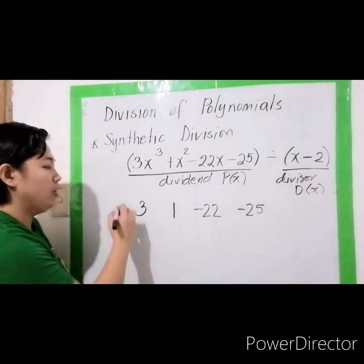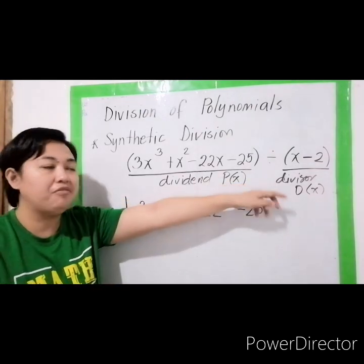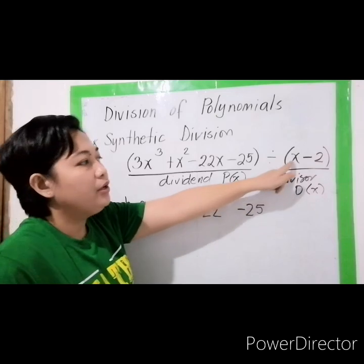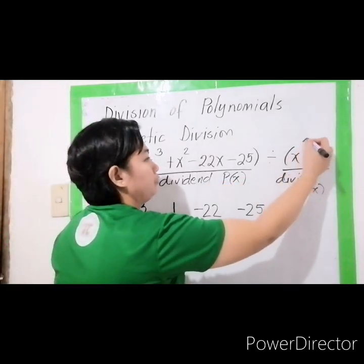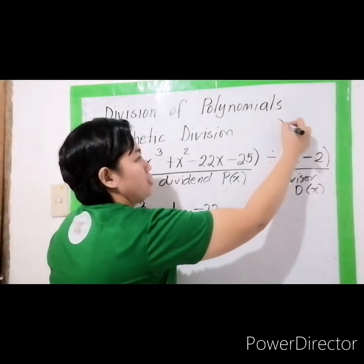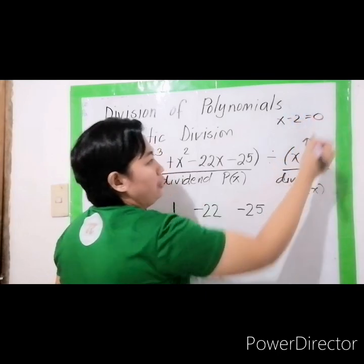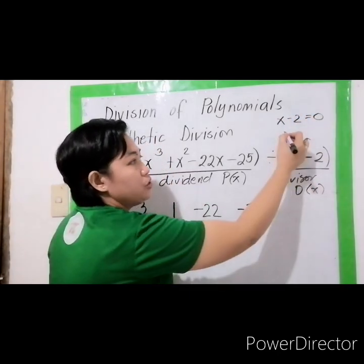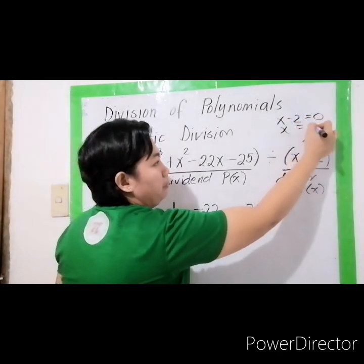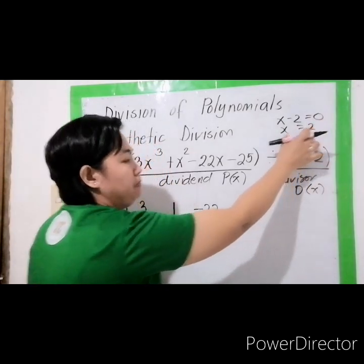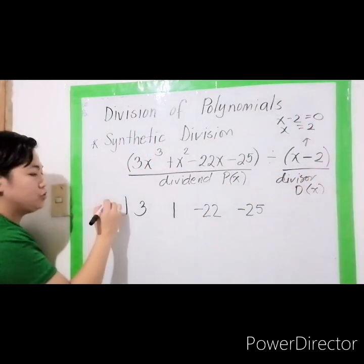Secondly, what are we going to divide by? Take a look at the divisor. You have x minus 2. Equate it to 0, so x becomes positive 2. That will be our divisor value here — so 2.